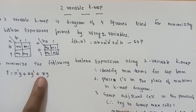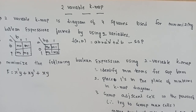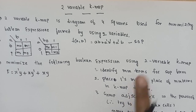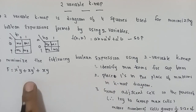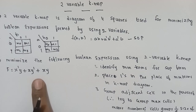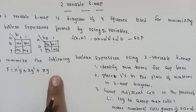Minimize the following Boolean expression using two variable K-map. This is the Boolean expression: X'Y + XY' + XY. In this case we have two variables used.